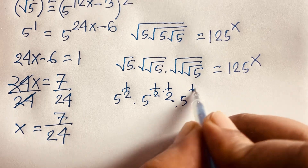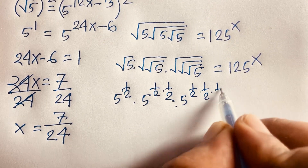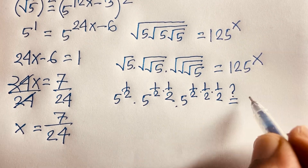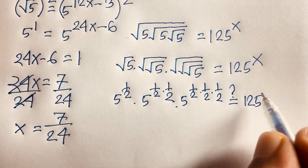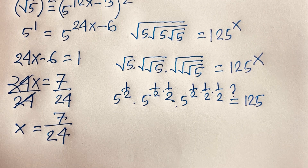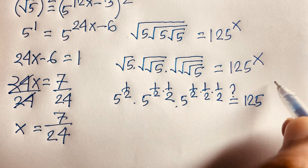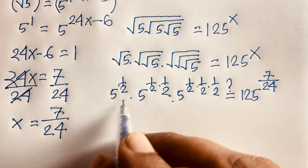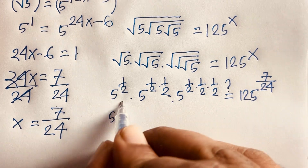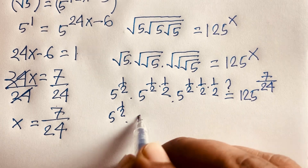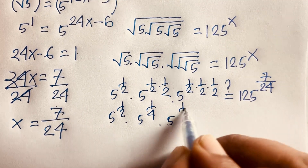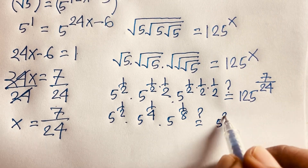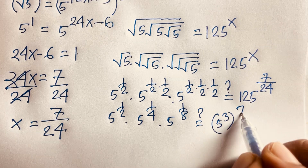So it is 5 to the power one-half times one-half times one-half, because there are 3 nested square roots. This equals 125 to the power x. With x = 7/24, we find 5 to the power one-half times 5 to the power one-fourth times 5 to the power one-eighth equals 125, which is 5 to the power 3, to the power 7/24.